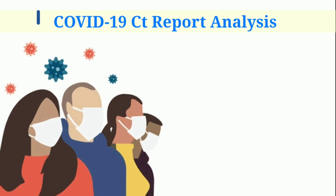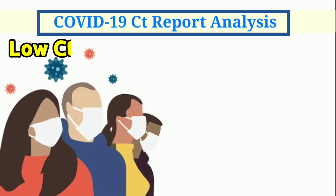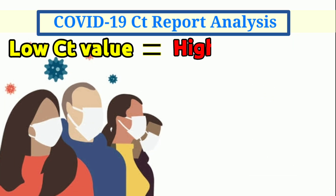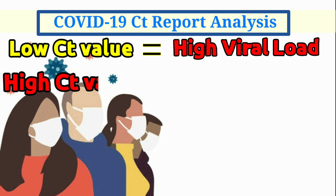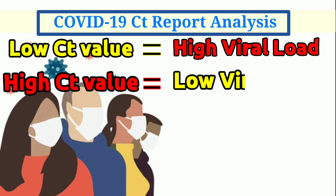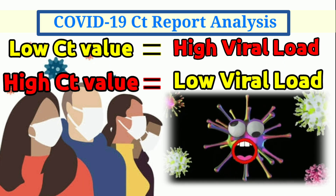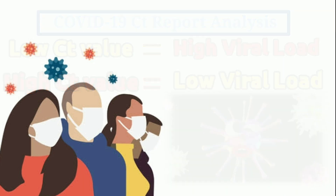So a low CT value — say for example 14 or 18 — with reference to the threshold of the laboratory, indicates a higher viral load. But a high CT level in your COVID test shows a relatively lower viral load.